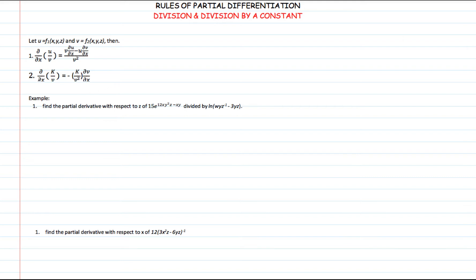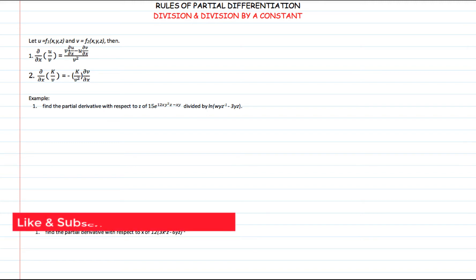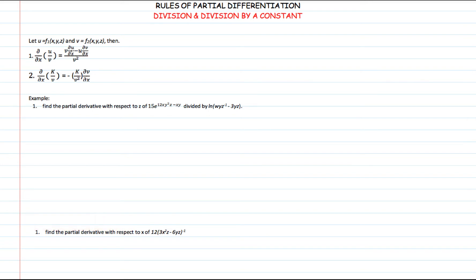In our case we are using x. What the rule says is that you have to multiply the denominator by the partial derivative of the numerator with respect to that variable, minus the numerator multiplied by the partial derivative of the denominator with respect to that variable. All of that should be divided by the square of the denominator.